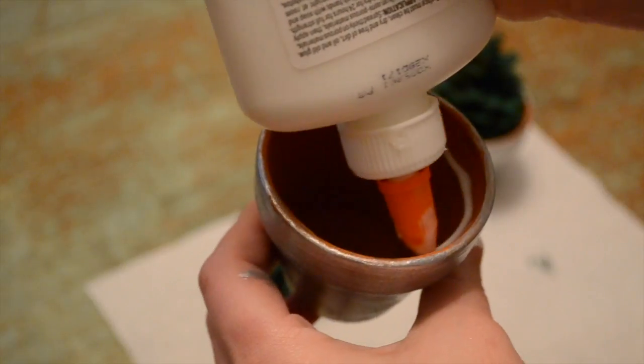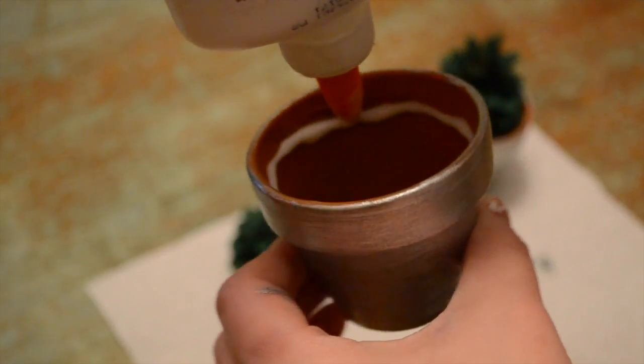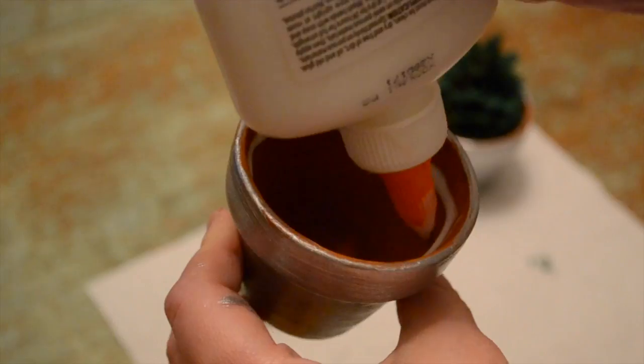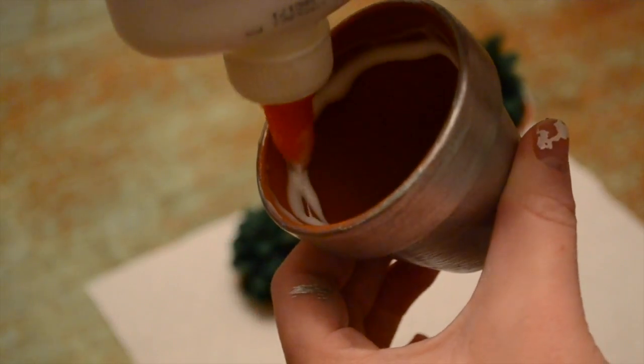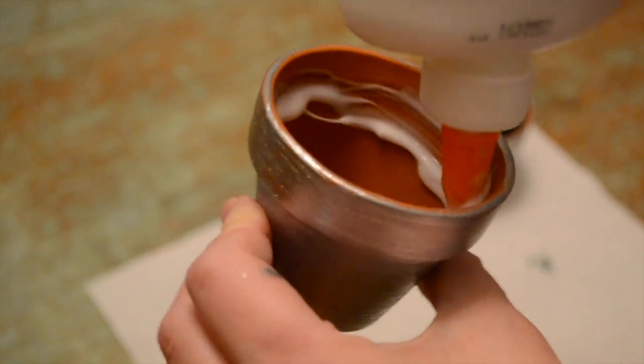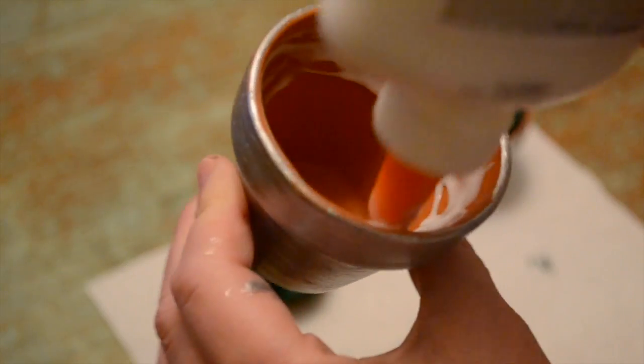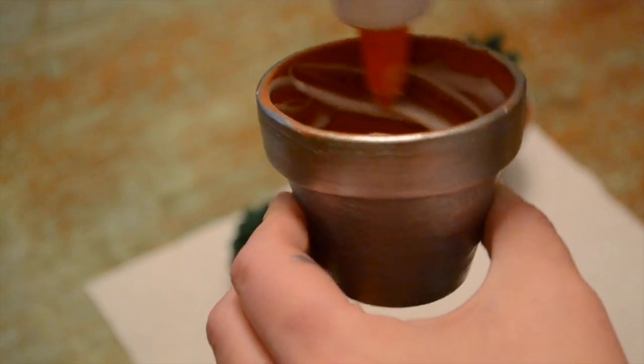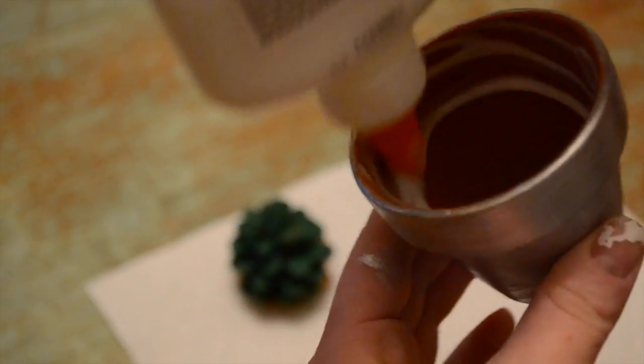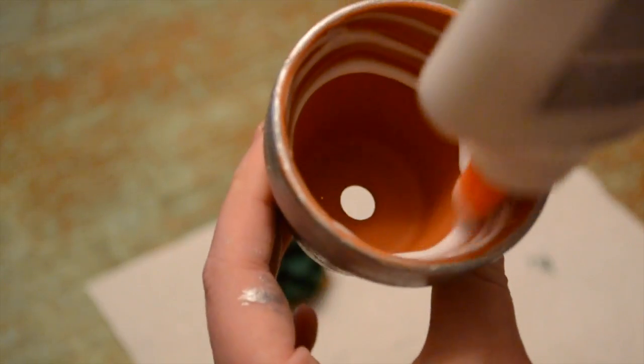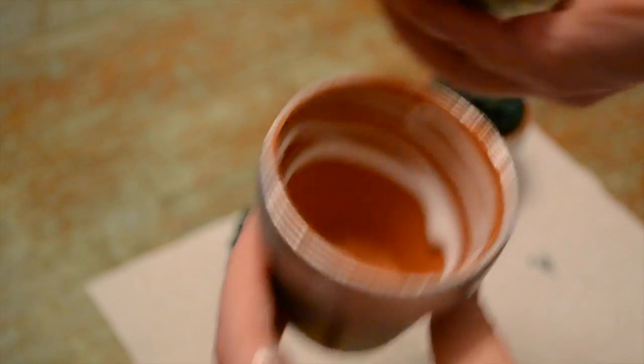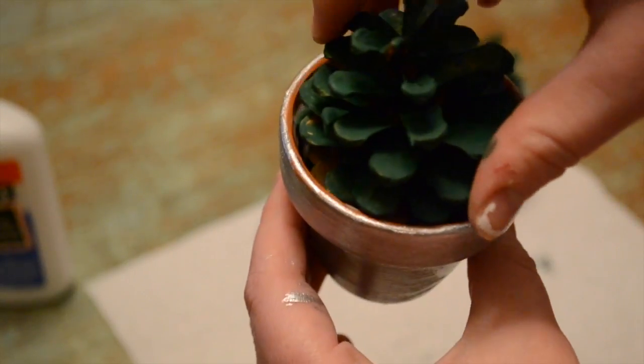Once the pinecones and the pots are fully dry, you are going to start to put craft glue on the inside of the pot where the pinecone is going to be placed. Then start to spread it out with the glue cap. You are then going to place your pinecone into the pot.